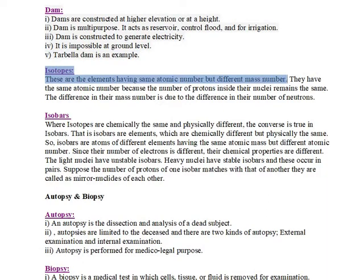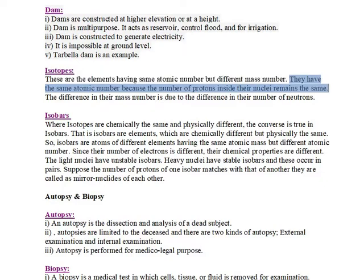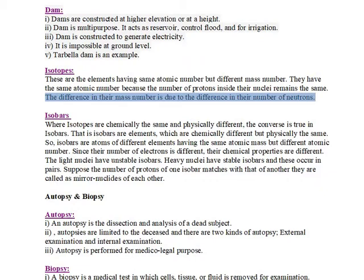Isotopes are elements having the same atomic number but different mass number. They have the same atomic number because the number of protons inside their nuclei remains the same. The difference in their mass number is due to the difference in their number of neutrons.